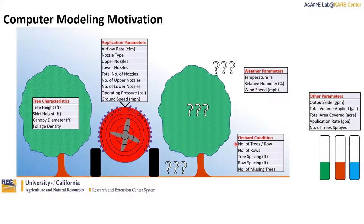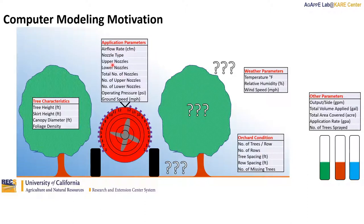The question remained: how can we estimate canopy deposition, potential drift, and potential ground fallout for planning and evaluation purposes across the wide range of situations that could exist — such as different tree characteristics, different orchard conditions, various combinations of application parameters, and a host of weather parameters? Field experiments present major limitations in terms of time, labor, material, and other resources. Nonetheless, computer modeling and simulation can help us overcome these limitations at a low cost.